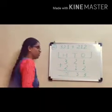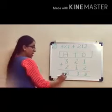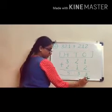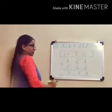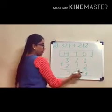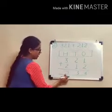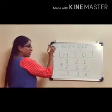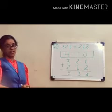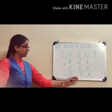Our final answer is 533. In that, 3 ones, 3 tens, and 5 hundreds. So the final answer is 533.